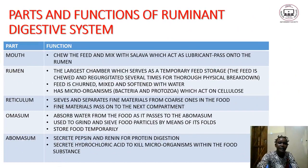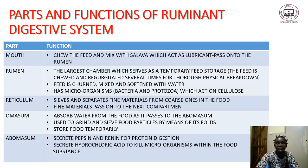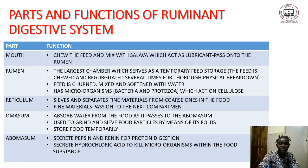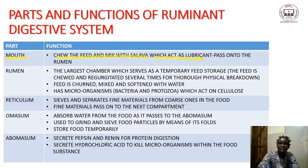It is important to know each part and its function in the ruminant digestive system. The first part is the mouth. The main function of the mouth is to chew the feed and mix it with saliva. Saliva acts as a lubricant so that the feed can easily pass on to the next part.